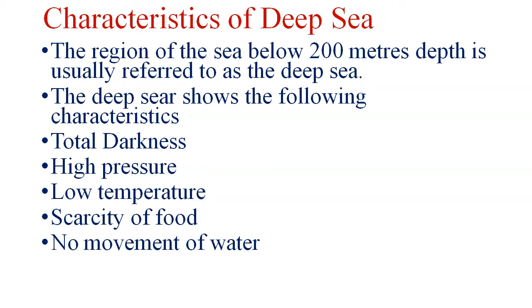The deep sea shows the following characteristics: total darkness — there is no light at the bottom of the sea — high pressure, low temperature, scarce food, and no movement of water.